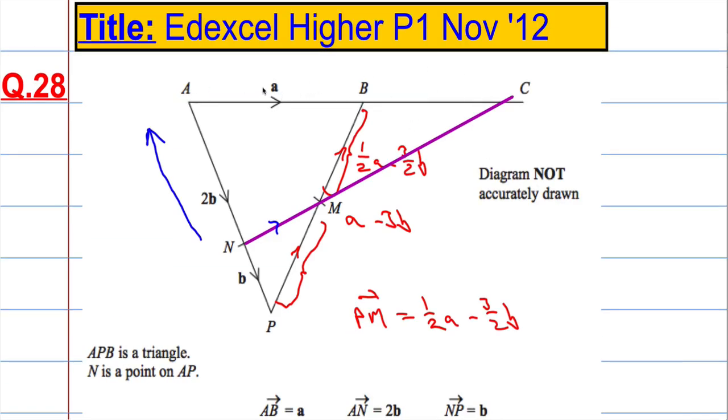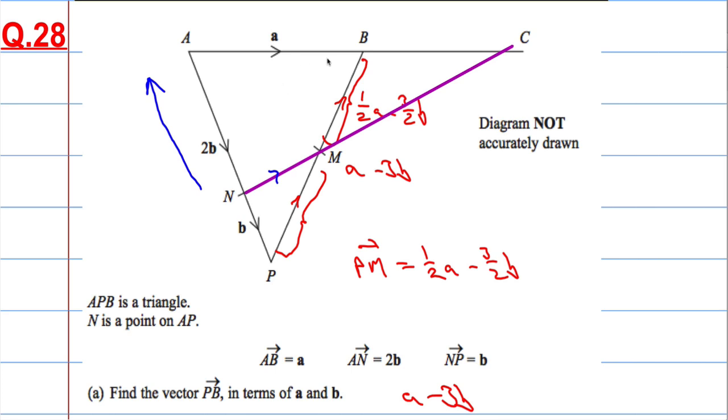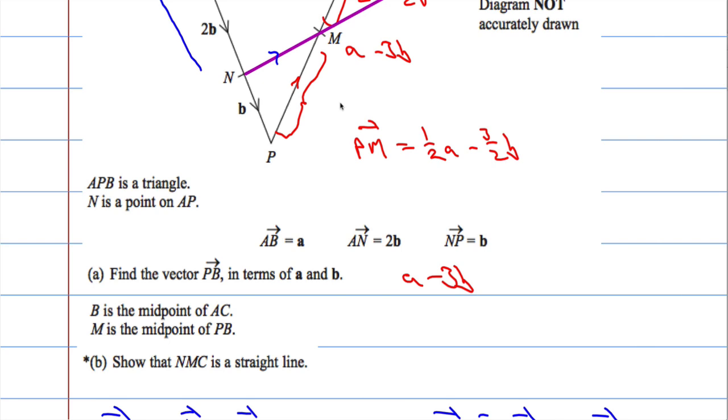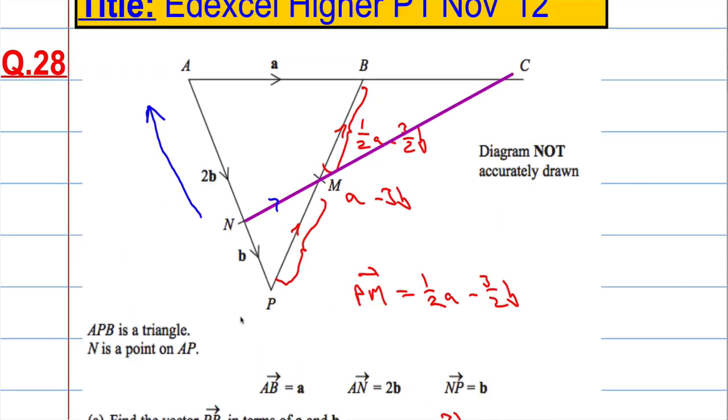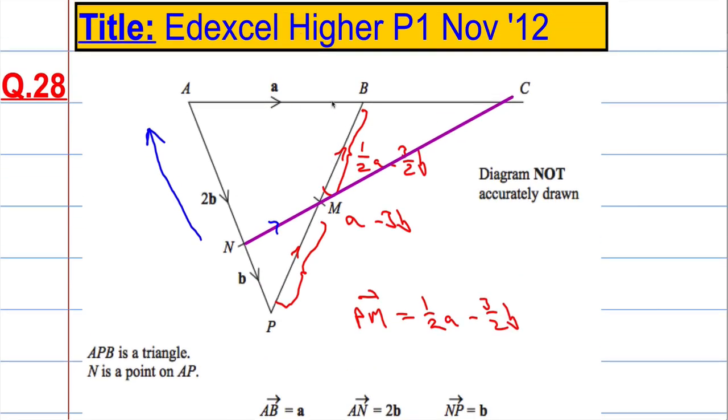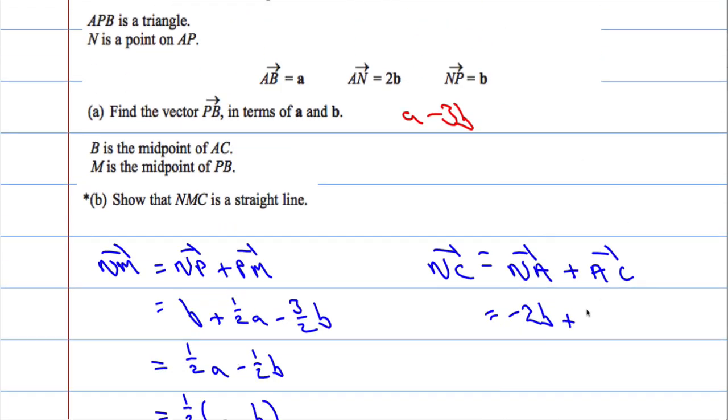well, I know from A to B is a, but do I know anything about here? Is B a midpoint? Let's have a look. B is the midpoint of AC. So B is the midpoint of AC. So if that's the vector a, well, then this must also be the vector a. So that means the vector AC is going to be 2a plus 2a. And I can factor out 2 here as well. So that's 2 times a minus b.